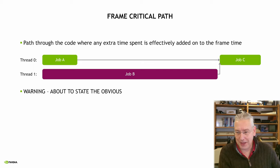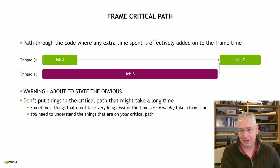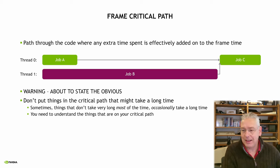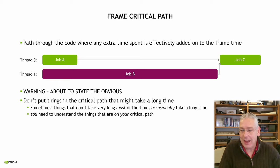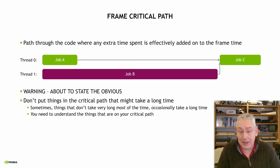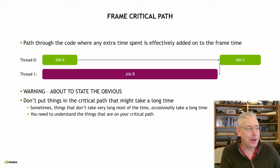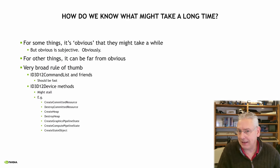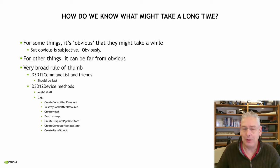Now this is blindingly obvious, but don't put things on the critical path that might take a long time. Sometimes things that don't take very long most of the time will occasionally take a very long time — and those are the things that catch people out. We need to understand those things and be aware if they've crept onto your critical path. So how do we know what kinds of things might occasionally cause those seemingly random stalls and stutters?